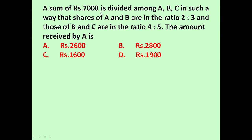Here the given problem is: a sum of Rs 7000 is divided among A, B, C in such a way that shares of A and B are in the ratio 2:3 and those of B and C are in the ratio 4:5.